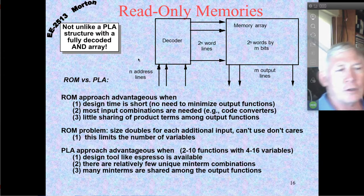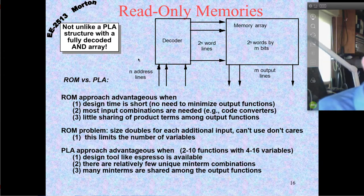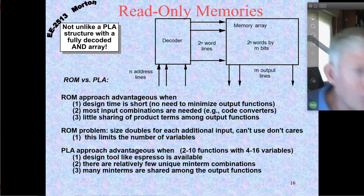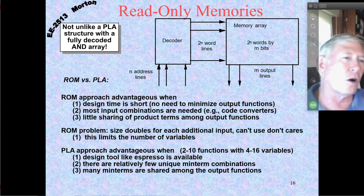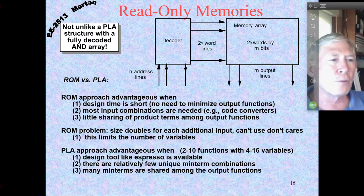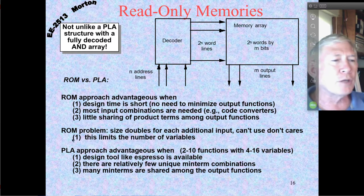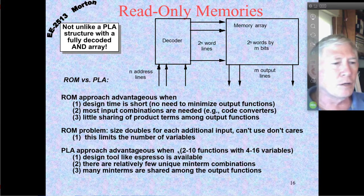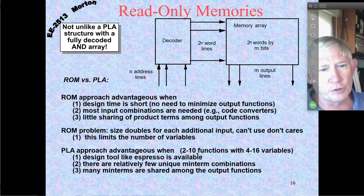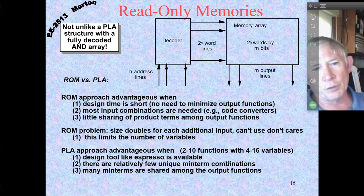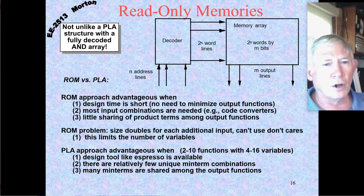A big ROM is perfect for that because you need almost all of the combinations. Whereas if you only needed a few things and could simplify greatly, you wouldn't want to implement it with a ROM — you'd be wasting a lot of storage. In that case you'd want discrete gates or a programmable logic device. These days we'd usually implement with CPLDs or FPGAs, or maybe a microprocessor.